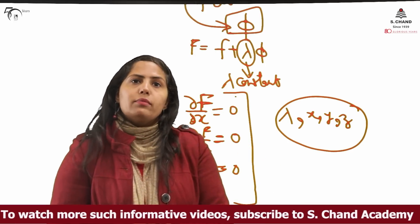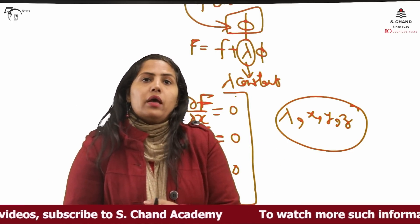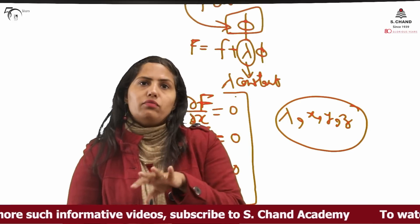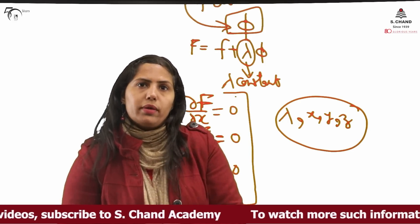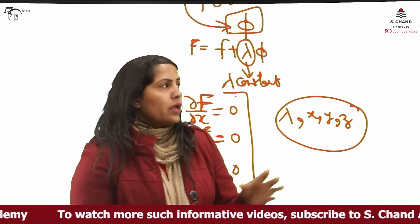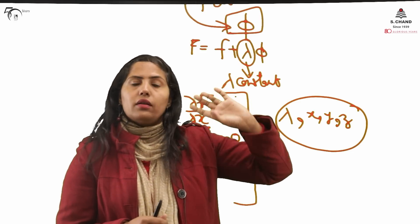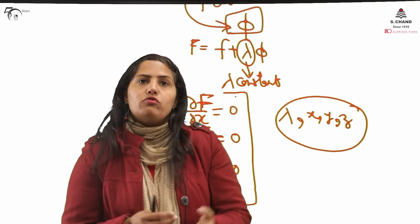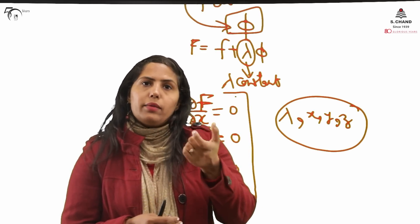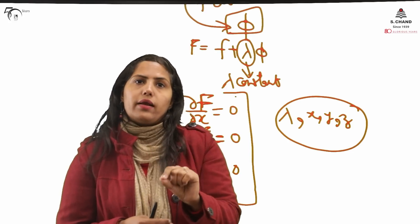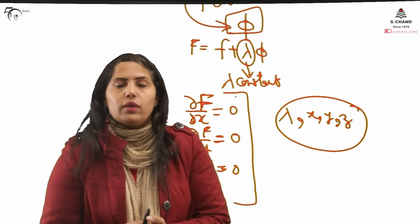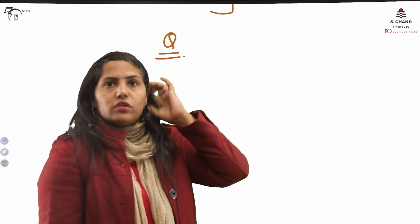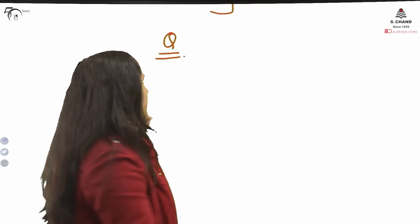When I was discussing maxima minima for two variables without a condition, the exact situation I was getting — if this is the situation, the function will be maxima; if this is the situation, the function will be minima. But in Lagrange multiplier, if one condition is given, then we are not checking anything. We will be assuming that if we are supposed to find maxima, then the values of x, y, z which we are getting will give the function its maximum value.